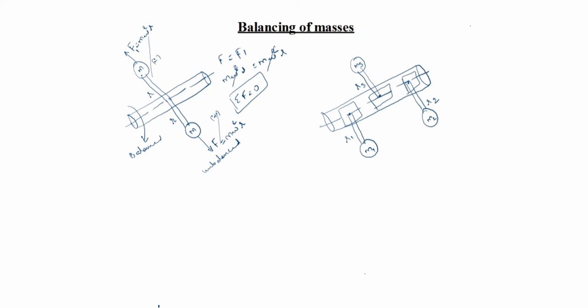We do not know the mass value, radius value, angular value, or the plane position. So we have to calculate the balancing mass using graphical method. We have to calculate mass, radius, and the particular location where the shaft is balanced using graphical method.